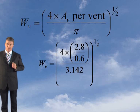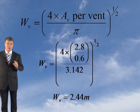Divide that by 3.142, and you square root the whole lot, you should have got a WV of 2.44 metres.